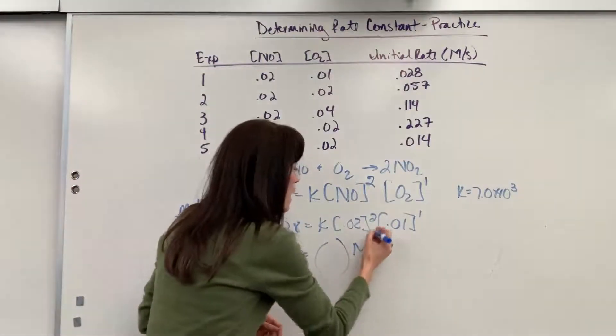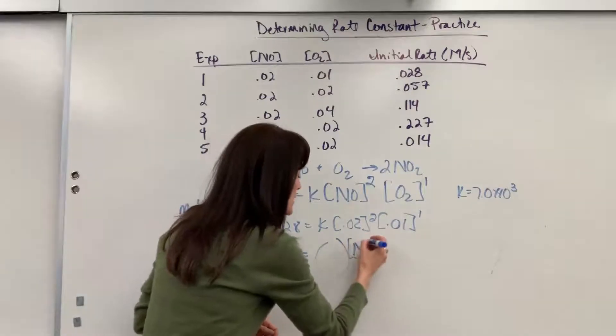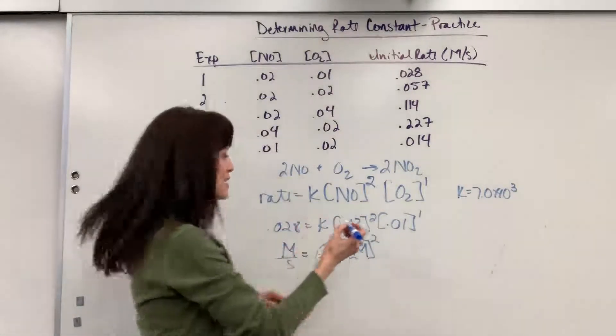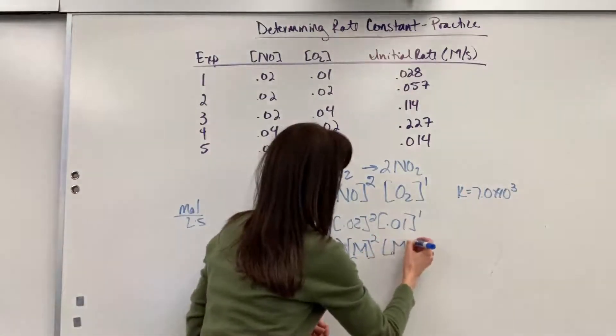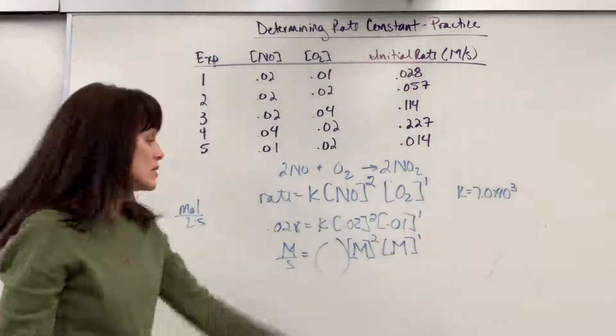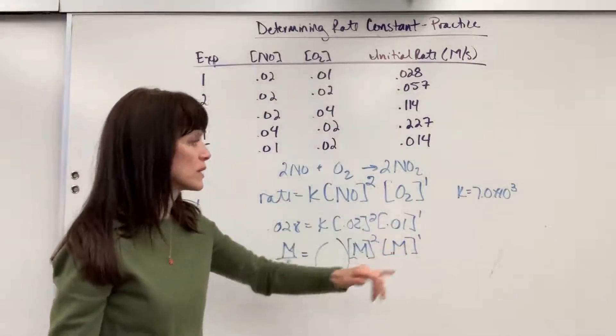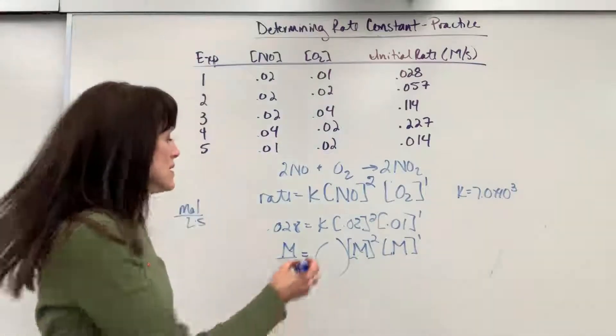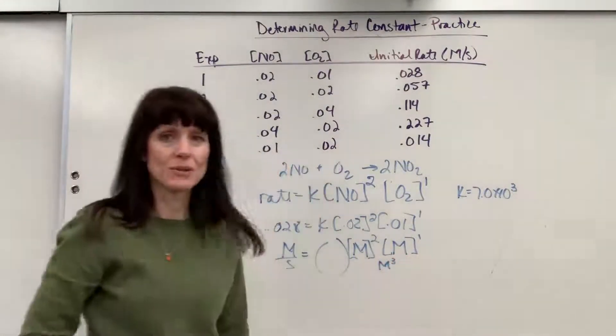So this is going to be molarity squared. So it'd be like that's molarity squared times molarity to the first. So remember molarity squared times molarity, you add exponents. That would be molarity cubed.